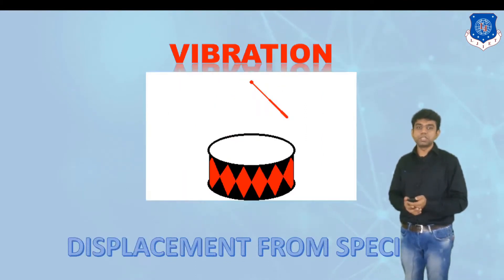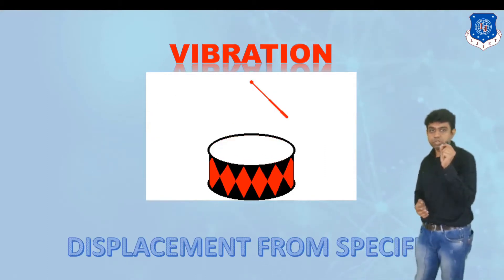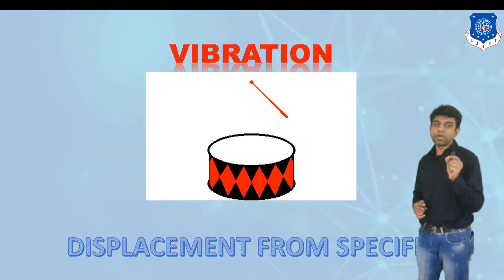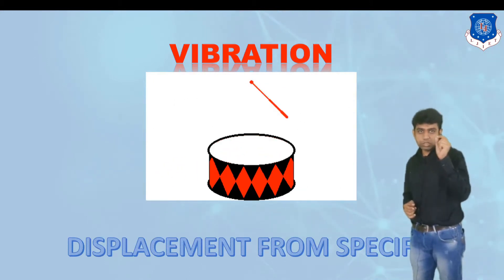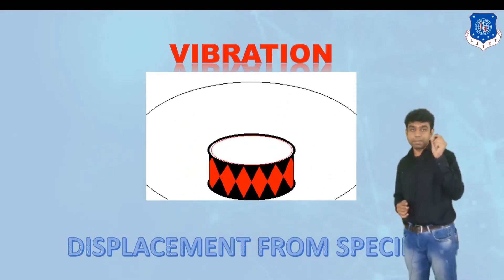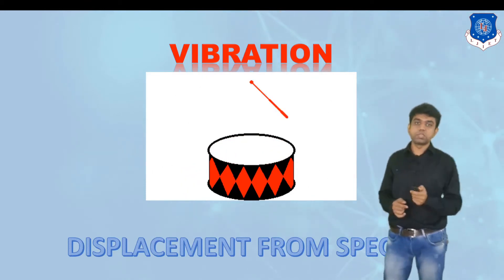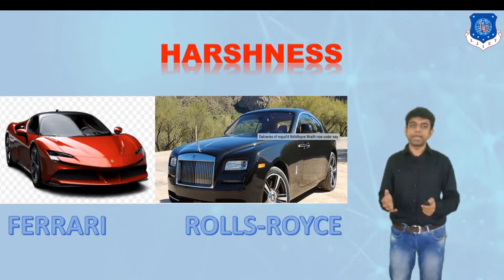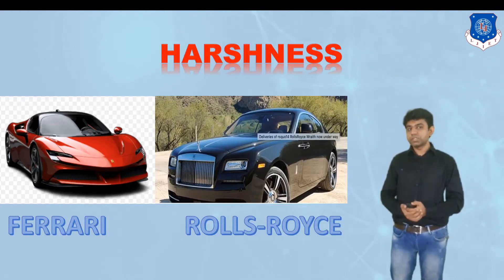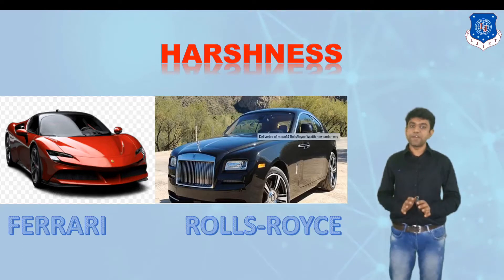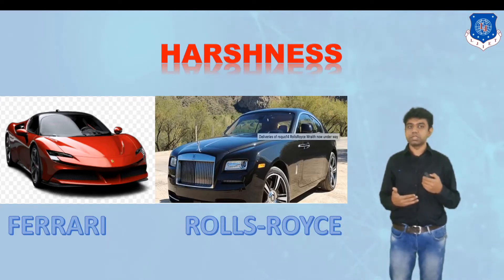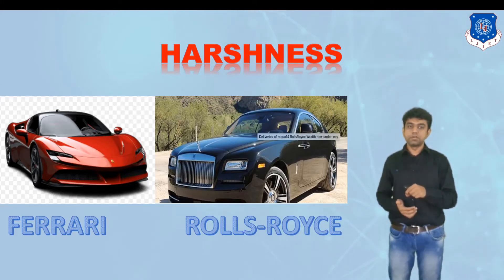The second term is vibration. Wherever there is a displacement of some quantity from its specific point, it is called vibration. If this displacement occurs repeatedly, it is called vibration. The third definition is harshness. Harshness is actually a very difficult term to define because it is a particular feeling which is associated with noise and vibration, but this feeling can be different for different people.